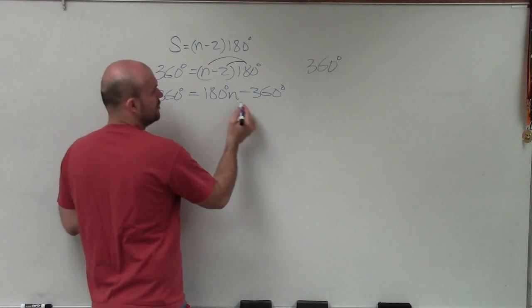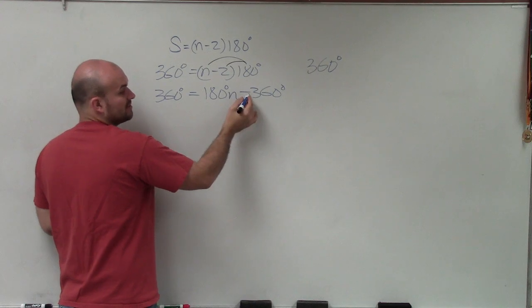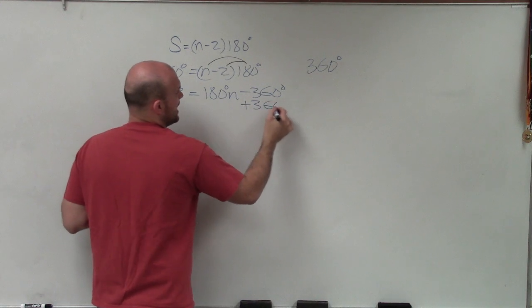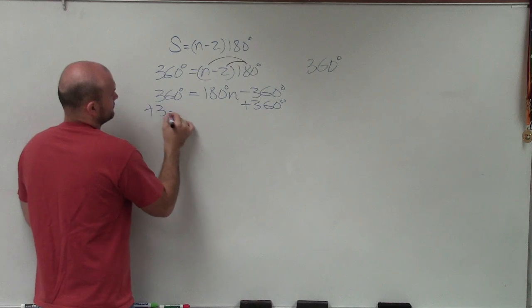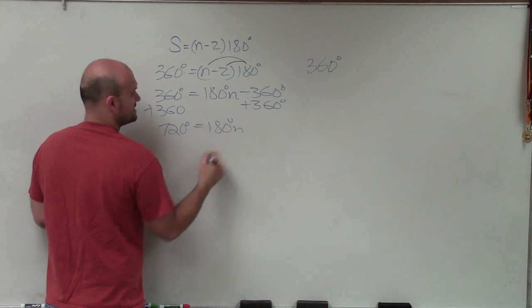So now, to solve for n, I'm going to undo the operations that's happening to the n. First thing I'm going to undo is subtraction of 360. So I add 360 degrees, and I get 720 degrees equals 180 degrees n.